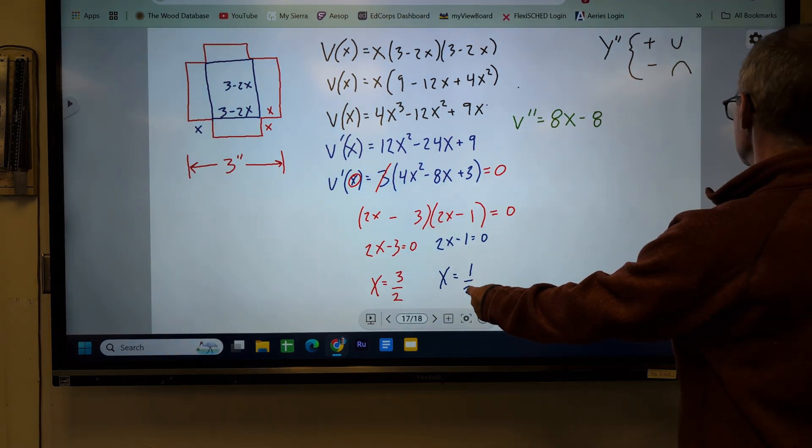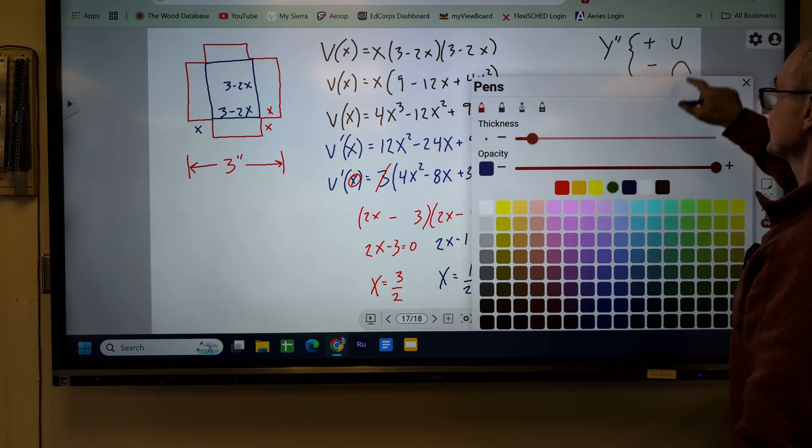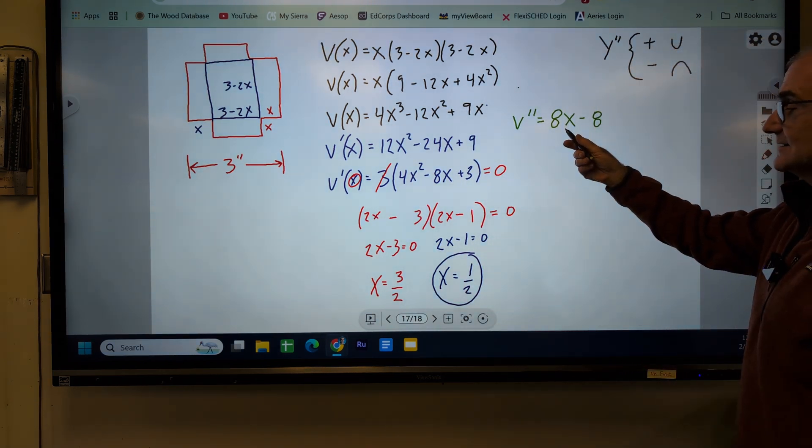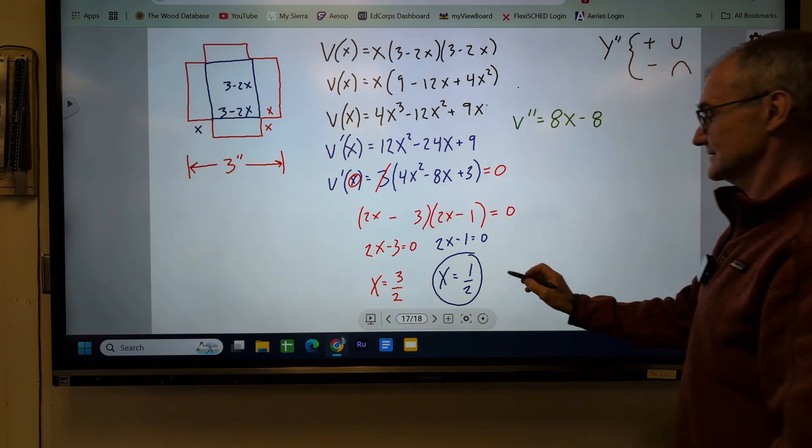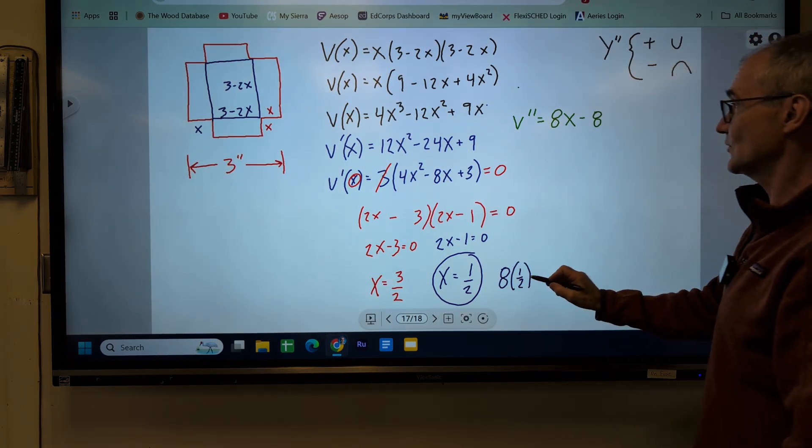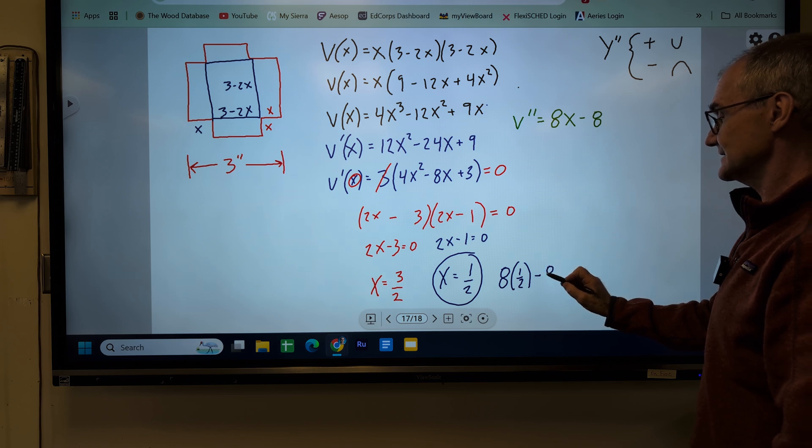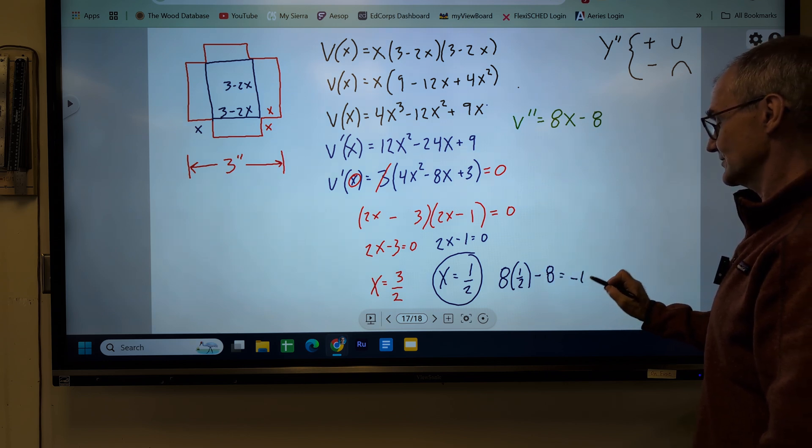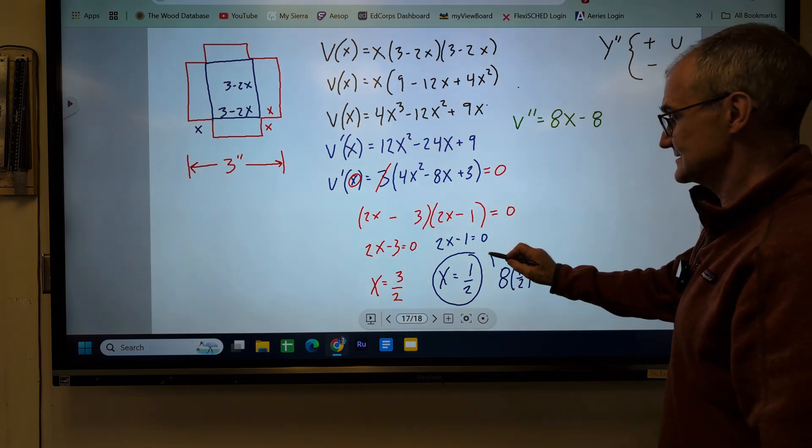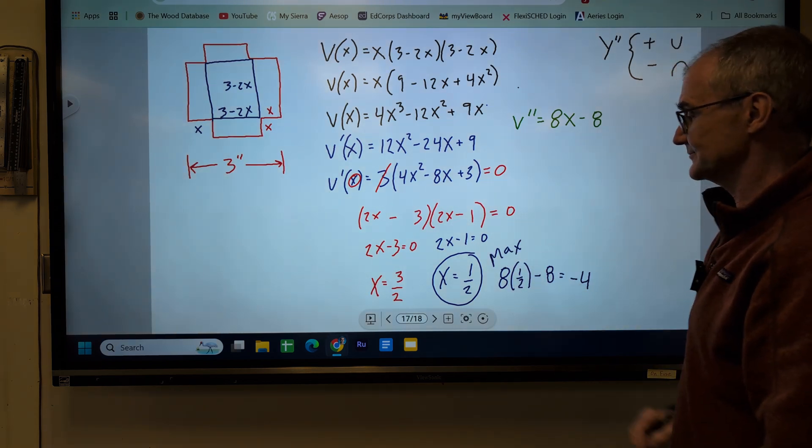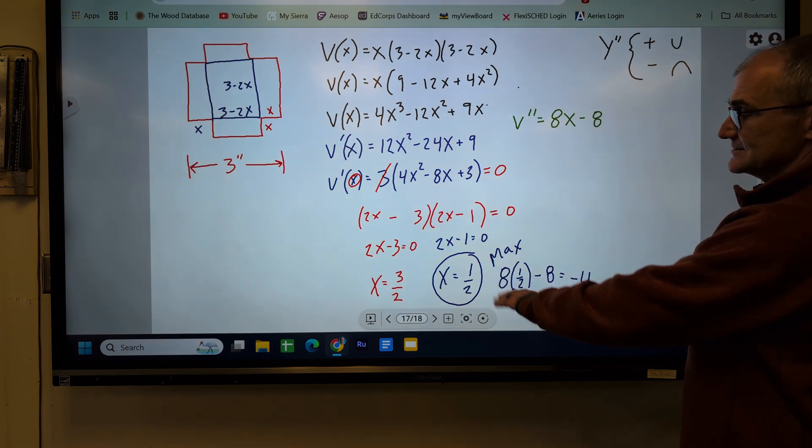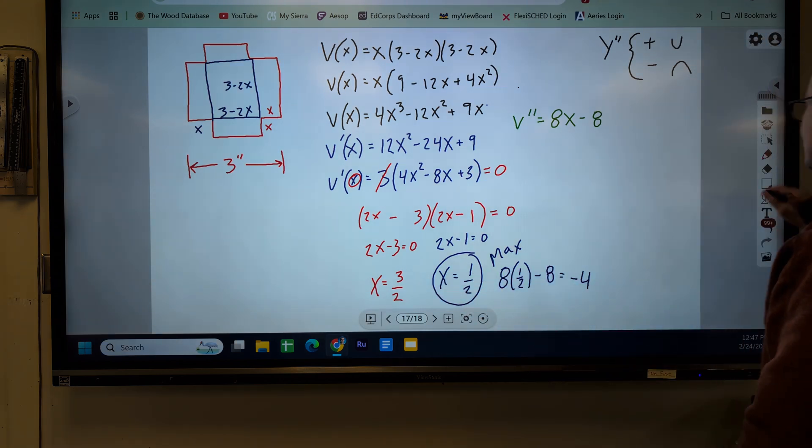Let me start with my blue value right here. So I'm going to take this blue value, 1 half, I plug it in here. 8 times 1 half, 4 minus 8 is equal to negative 4. It is negative. Because it is negative, this is my maximum. I could actually be finished right there knowing this is my maximum. But let me do that value as well.